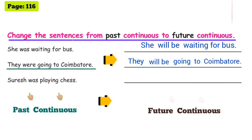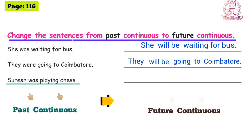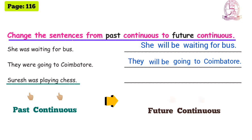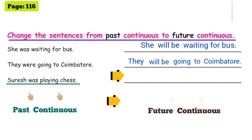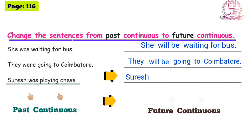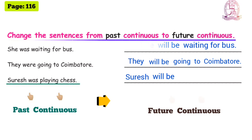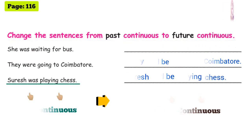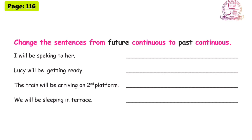Next sentence: 'Suresh was playing chess.' Past continuous tense. Convert to future continuous tense: 'Suresh will be playing chess.'